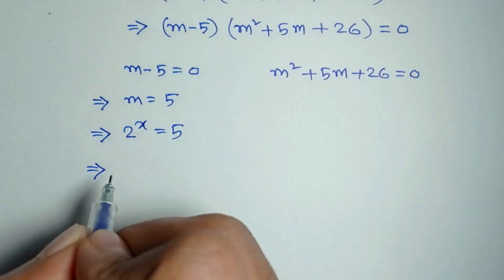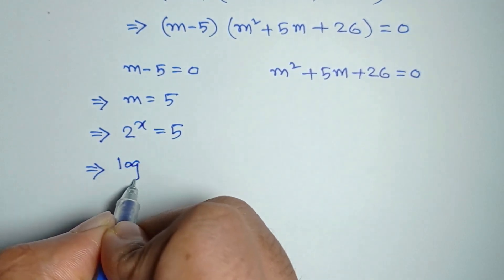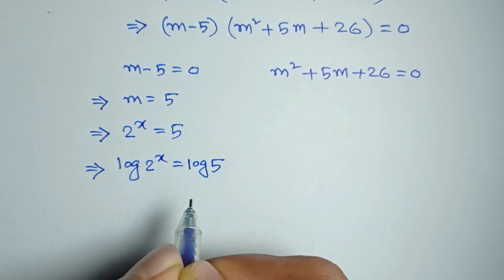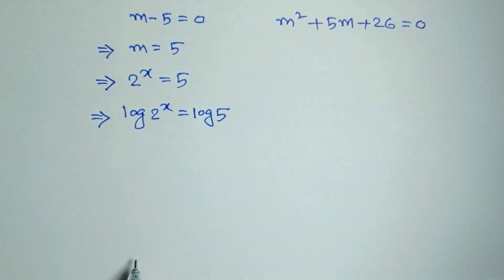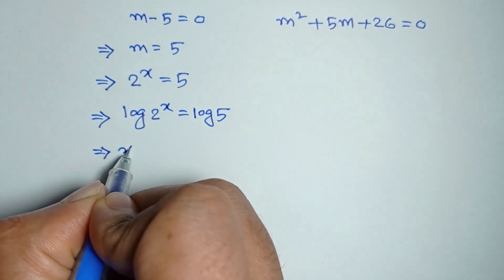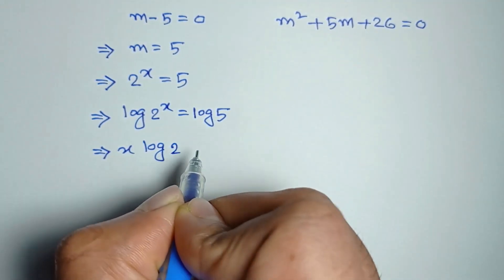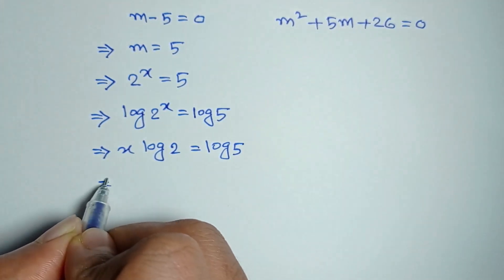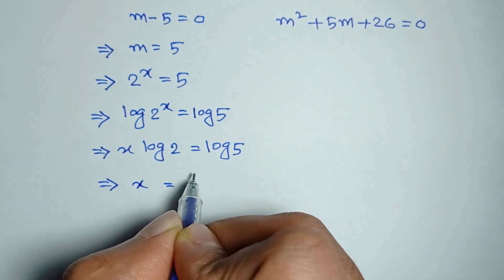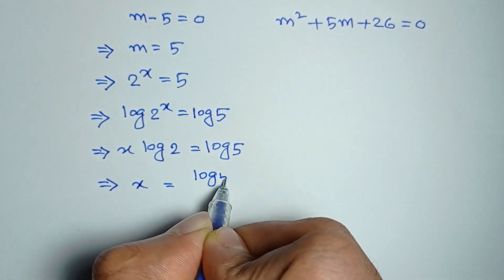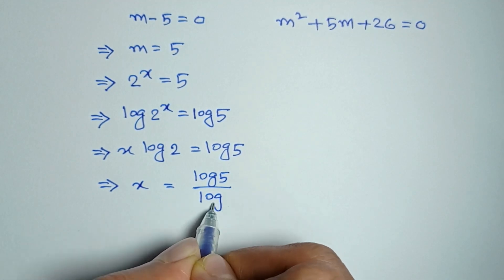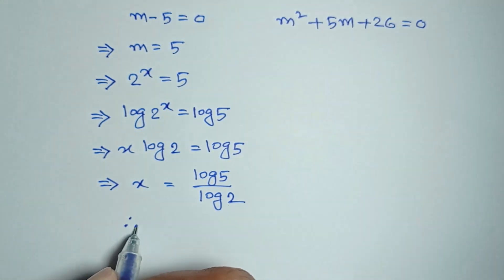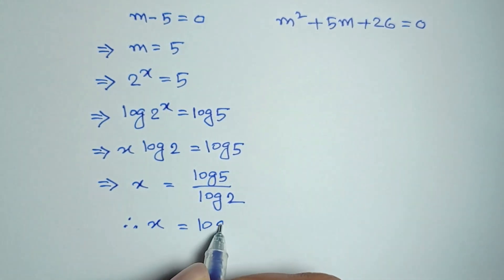Taking log on both sides, we get log of 2 to the power x is equal to log 5. Therefore x is equal to log 5 divided by log 2.